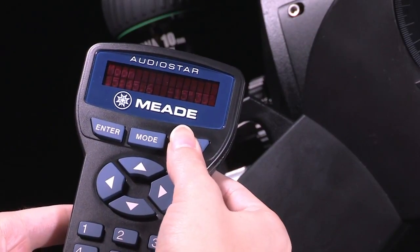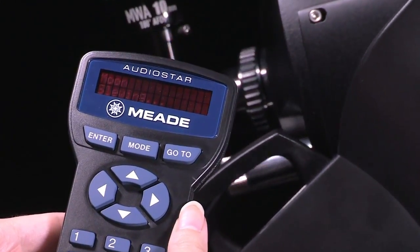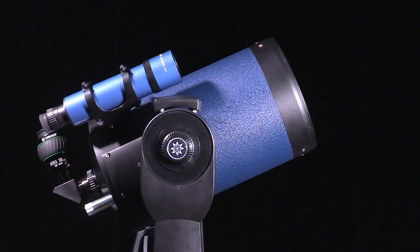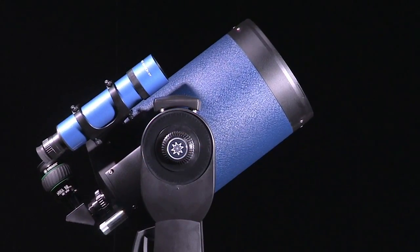Simply select a planet, galaxy, nebula, or star on the AudioStar hand control, and the LX90 will automatically point to it.